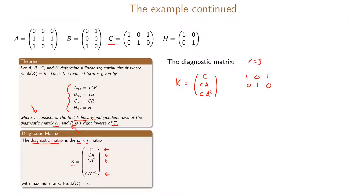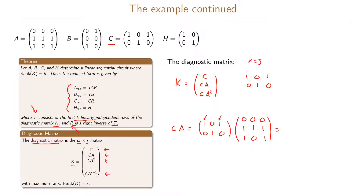We now compute C times A. This equals the matrix [1,0,1; 0,1,0] times A = [0,0,0; 1,1,1; 1,0,1]. The first row of the result is the sum of the first and third rows of A, giving 1, 0, 1. The second row is just the middle row of A, giving 1, 1, 1. So those become the next two rows of K.